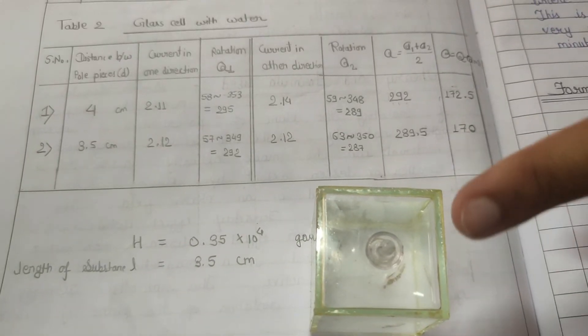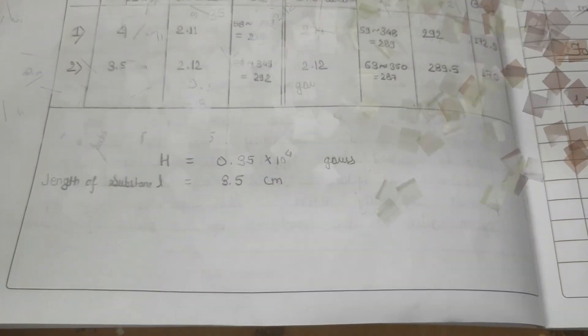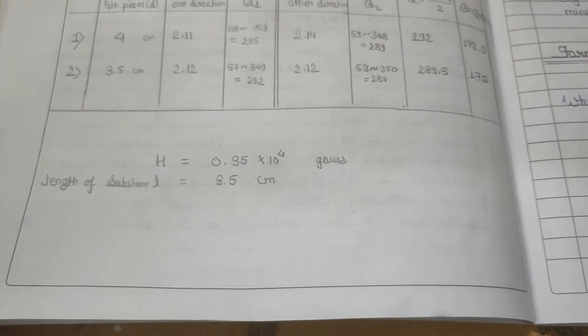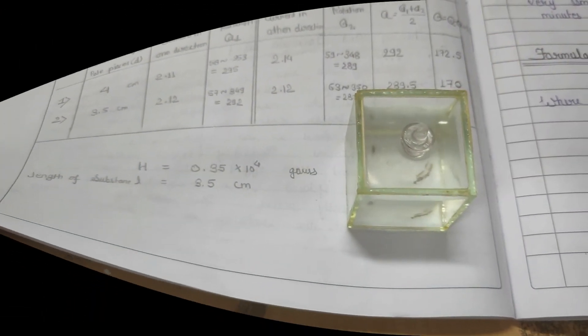Now we will do the same process for the substance. We have taken the substance as water. We have taken the magnetic field as 0.35 times 10 to power 4 Gauss and the length of substance is 3.5 cm.